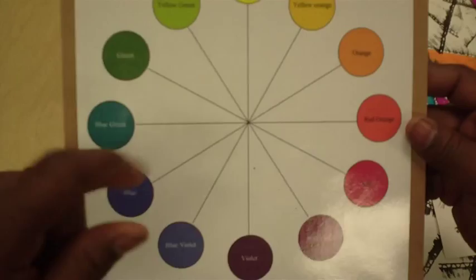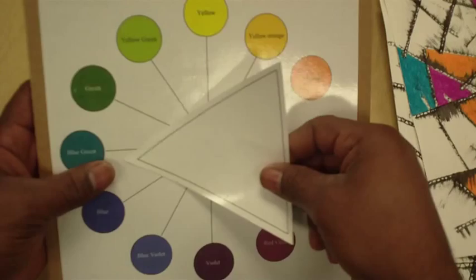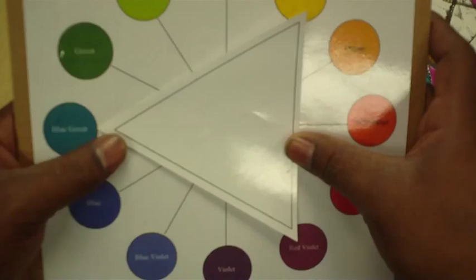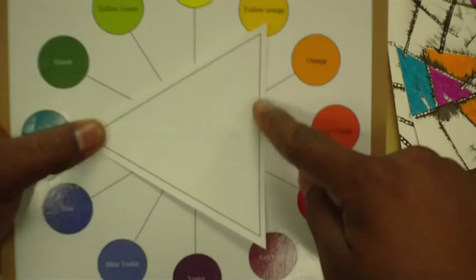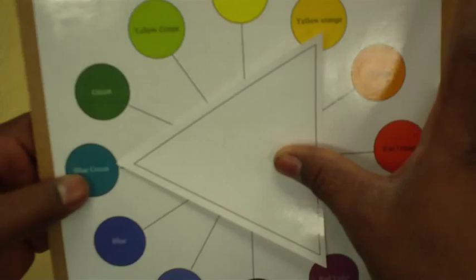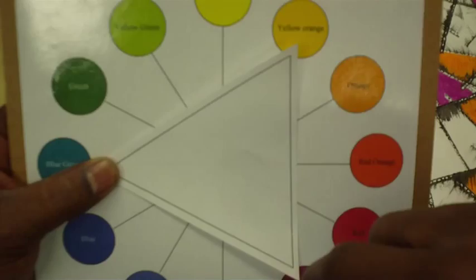So you would pick one of these colors that you just had to have on your picture. Pick one color that you just had to have on your picture. Once you pick that color, you take your triangle and you place one of the points—doesn't matter which one—just place one of the points on that color. See, I really like that blue green. Now once that is pointed at the blue green, hold it in place, and the other two points are going to point to the other two colors that go well with my blue green. So I want to use blue green, then that means I have to use yellow orange and red violet or red purple.